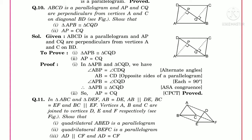From the ASA congruence property we can say these two triangles are congruent. If two triangles are congruent, then by CPCT their corresponding parts are also equal. The corresponding parts here are the perpendicular lines AP and CQ, so AP equals CQ. This completes the proof for question number 10.